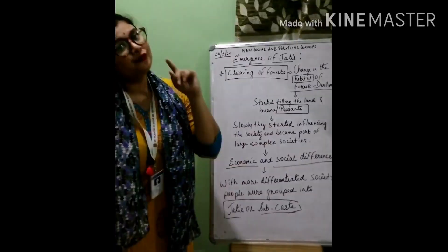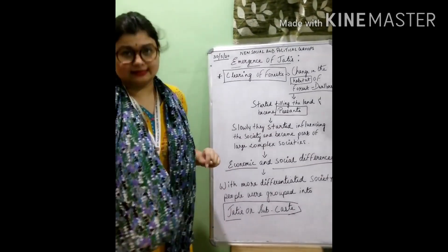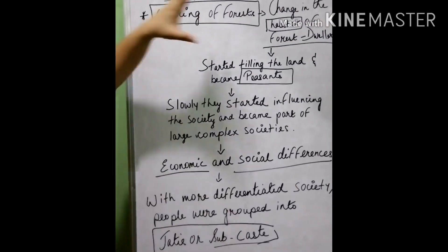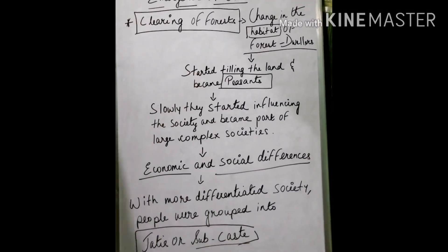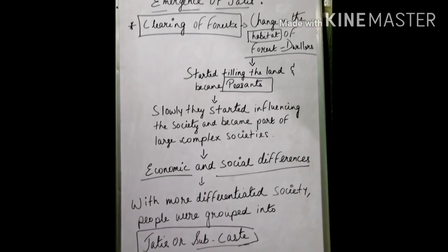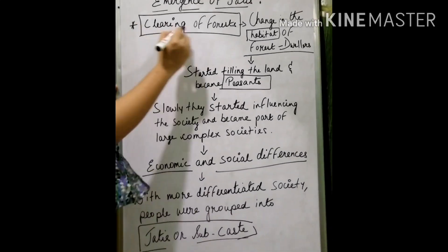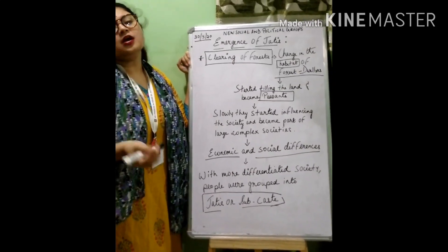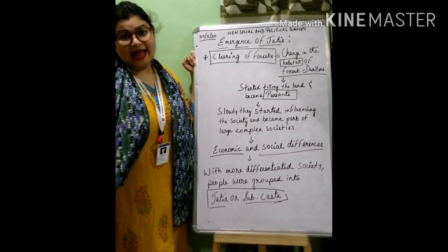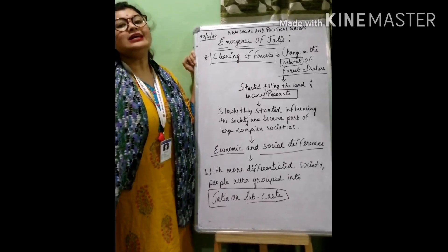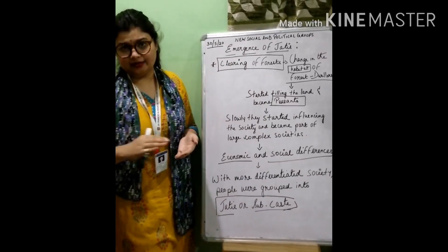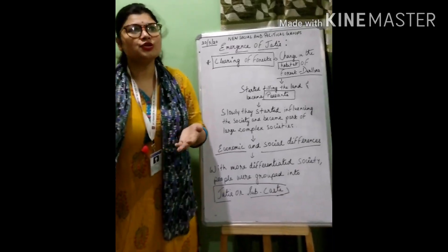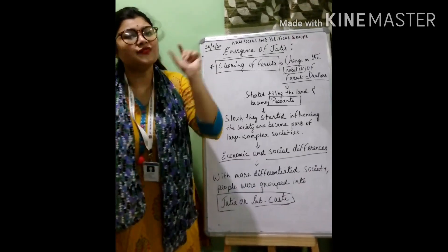Now today, you will know about jatis — the emergence of jatis, and how these jatis emerged in the society. With the passage of time, for the extension of agriculture, forests were cleared. And when forests were cleared, there were also people who used to live in the forest, and they were known as forest dwellers.